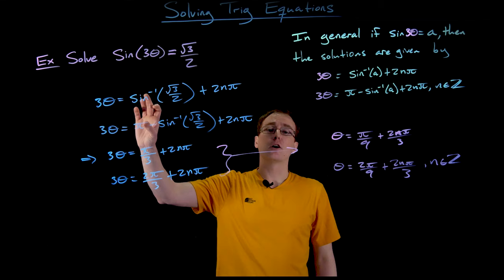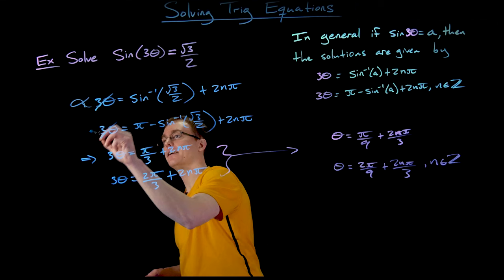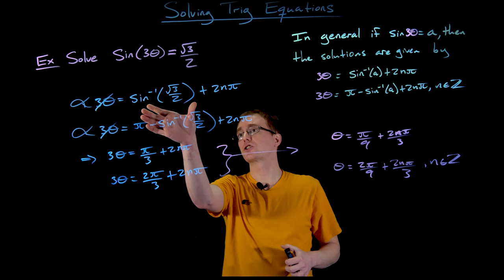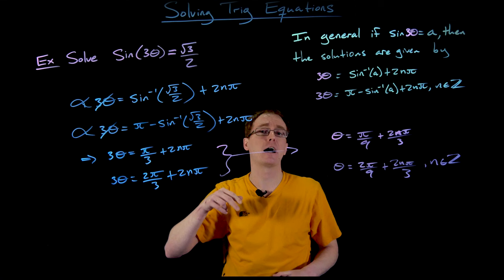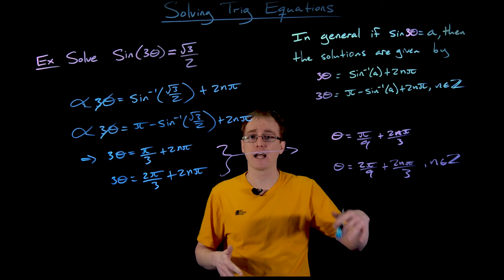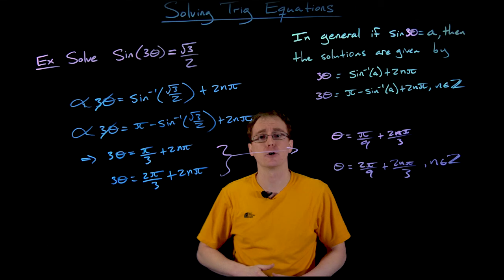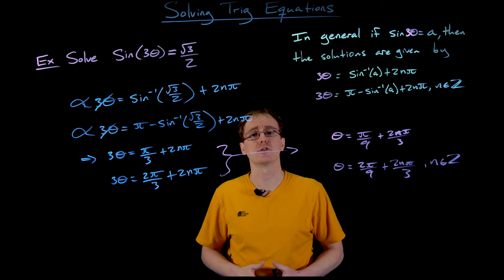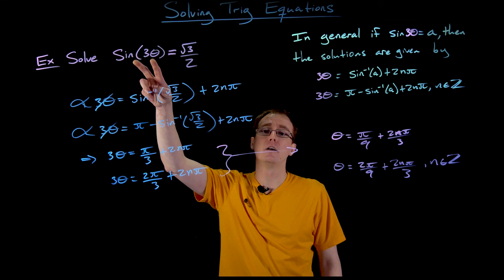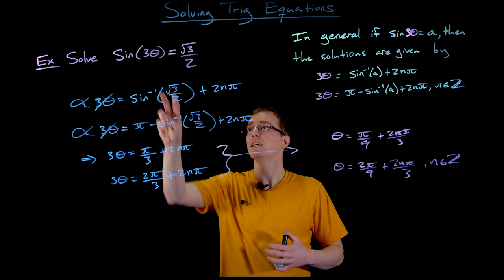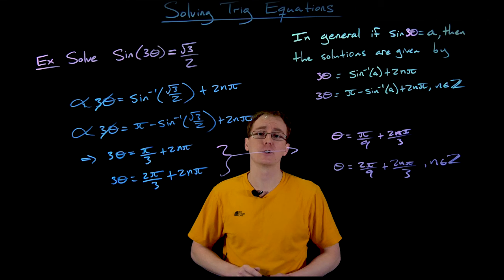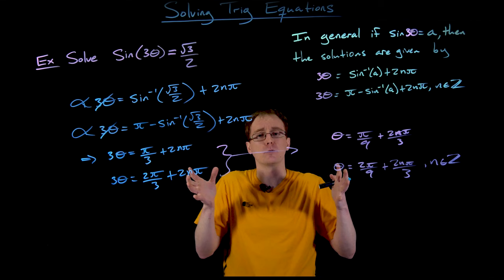If we go back to our original description of the solution set and think of these almost like some other angle — like alpha or a single theta without that multiple of 3 — this really is the description of the entire solution set if our function were just sine of theta, or sine of alpha, equal to the square root of 3 over 2. We still have that graphical interpretation of the sine wave being intersected with a horizontal line at y equals the square root of 3 over 2. But now instead of graphing sine of theta, we're graphing sine of 3 theta, which is a horizontal compression by a factor of one third.